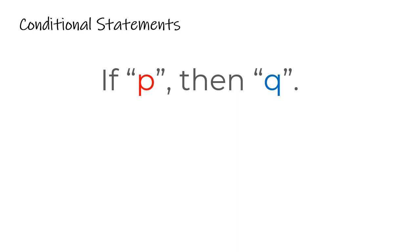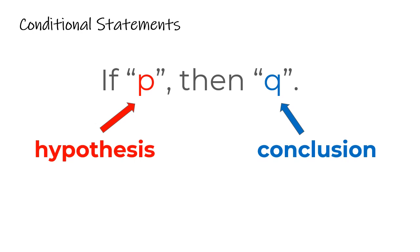Now let's get into conditional statements. A conditional statement is simply a logical statement that's in an if-then format, where something is a result of the other or a condition of the other. We always put it in this if-then format using P and Q, to designate the hypothesis and the conclusion — because in the next video you'll be changing the order of these hypotheses and conclusions to see if the statement still holds true. You might also see the symbol where P has an arrow to Q; that is the symbol for the conditional statement. If you switch the order, it's a different kind of statement.